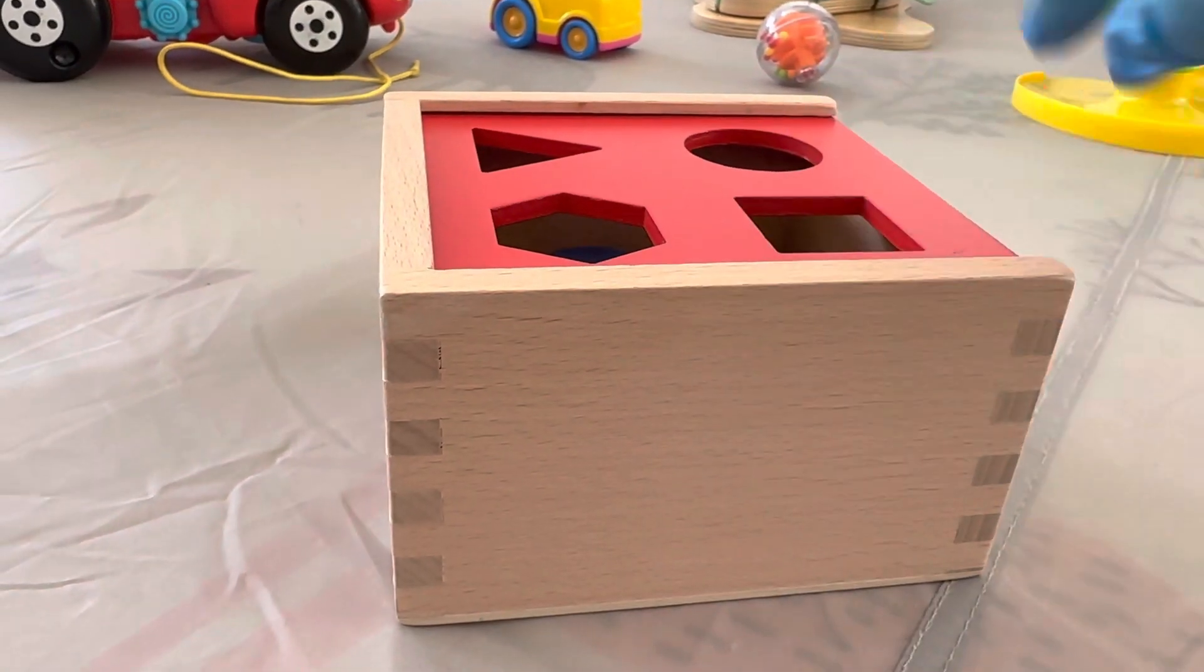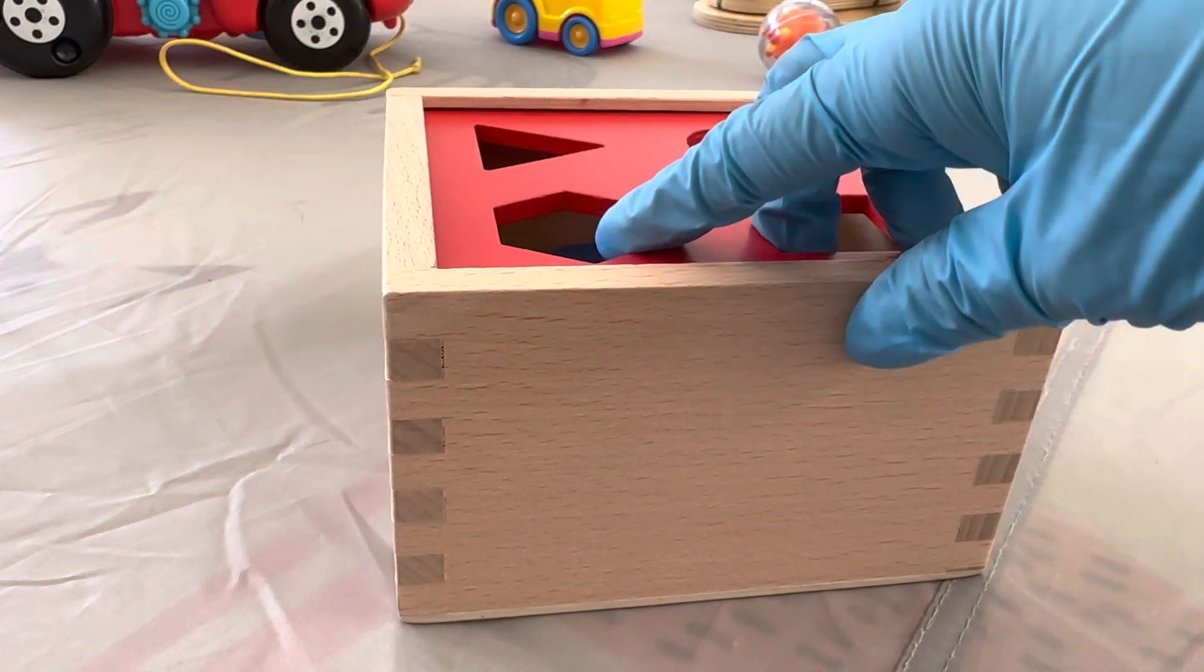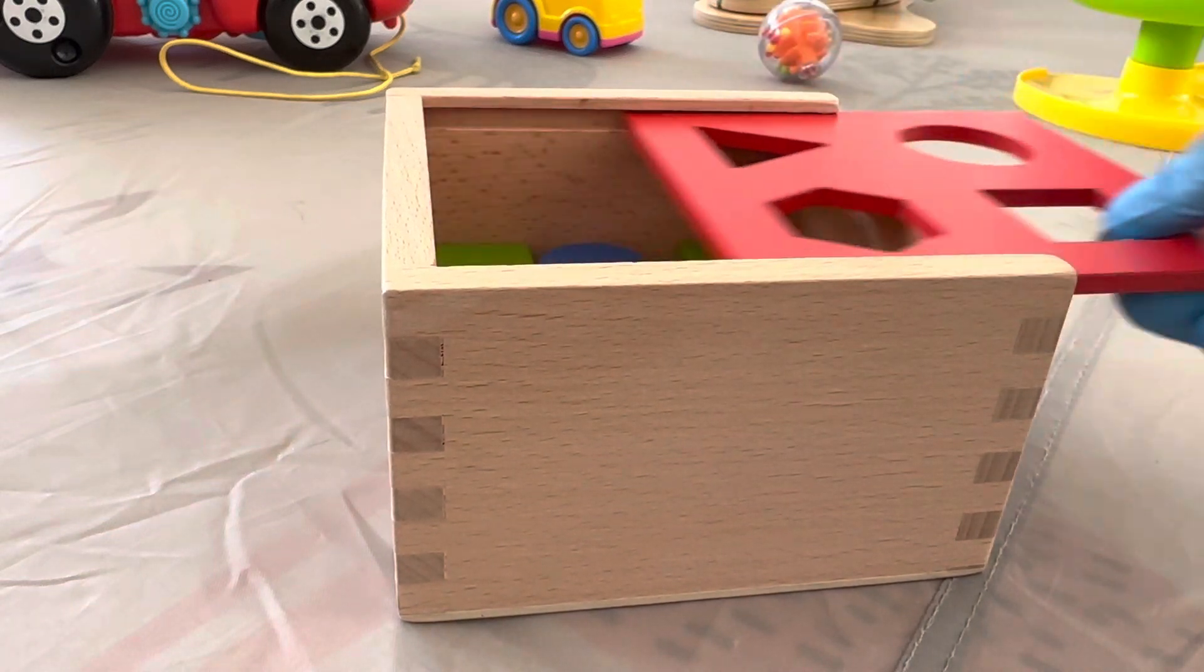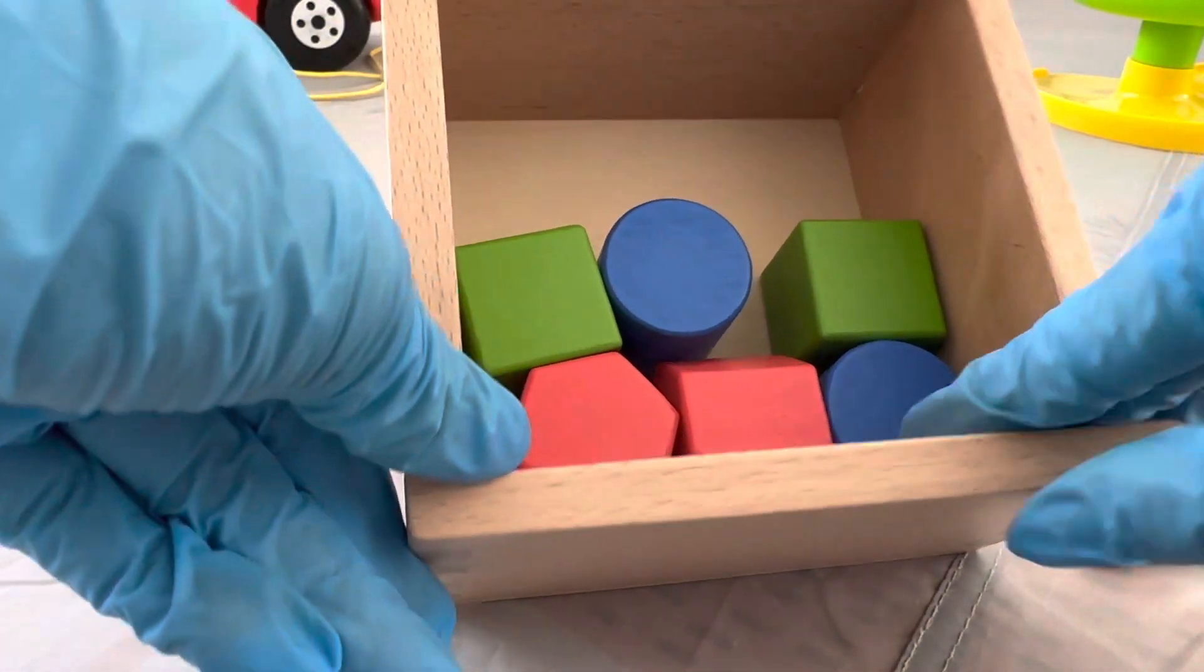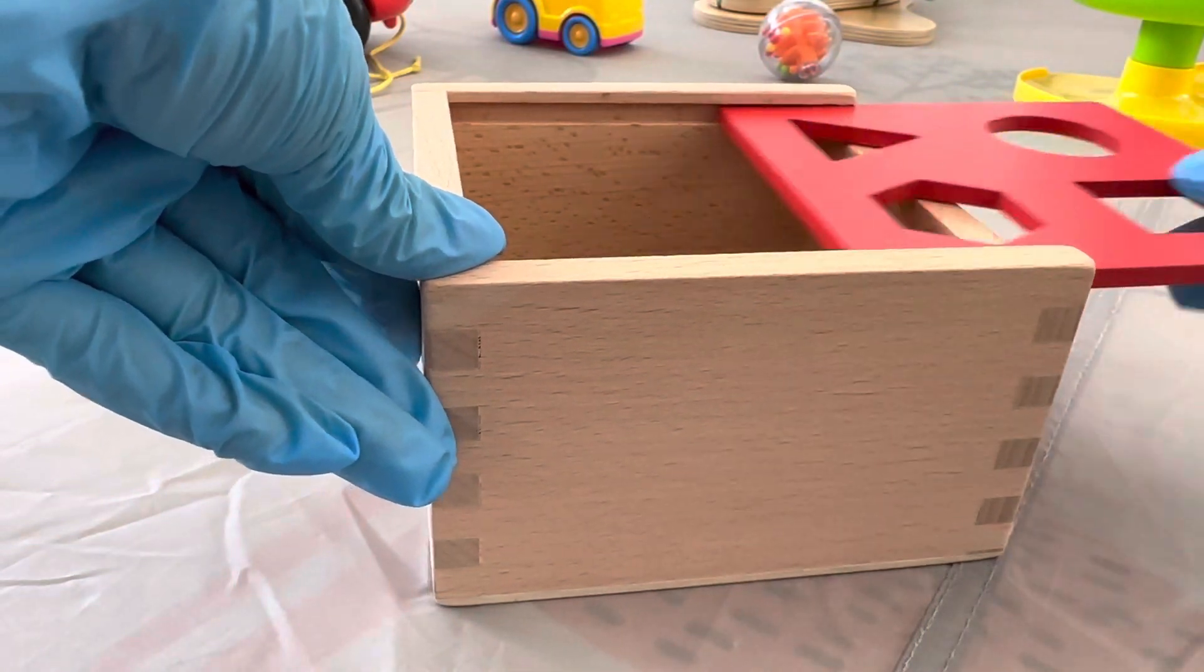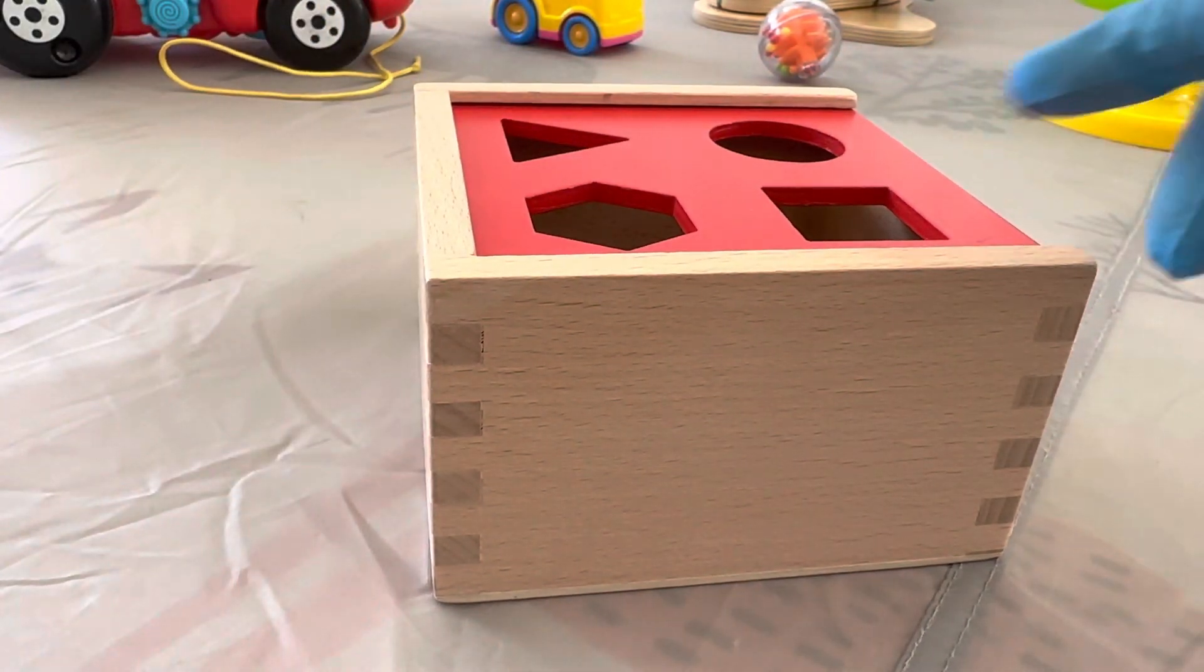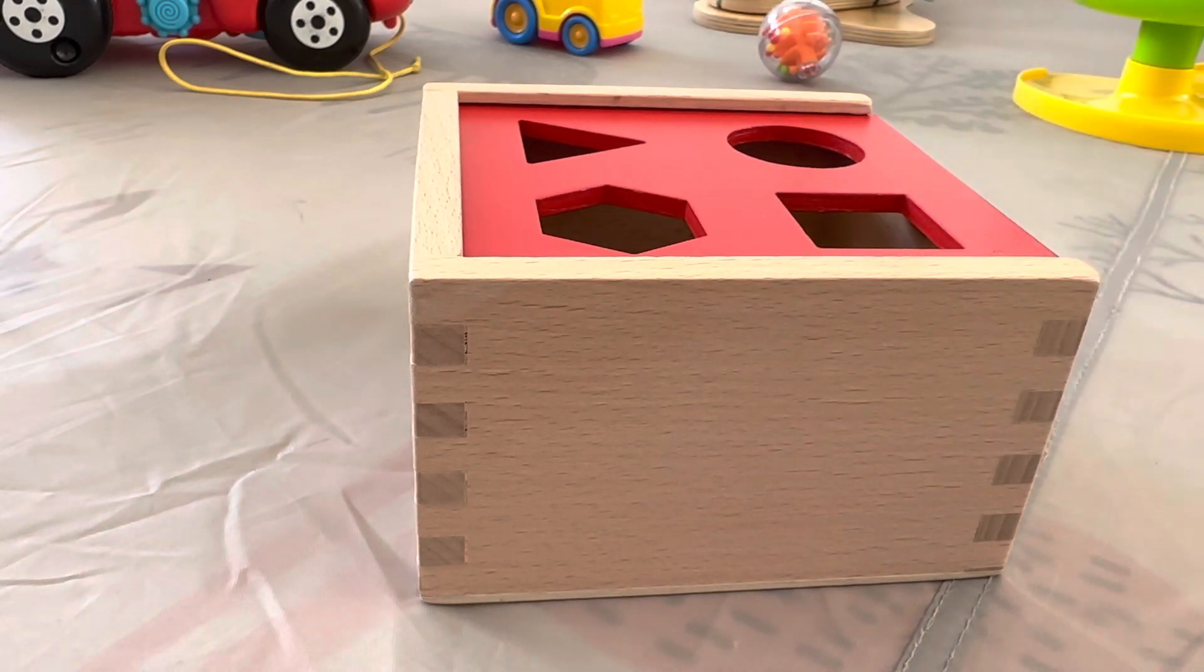When the baby is older, they can just put all the shapes through the sorter to the box. Right now, I just opened the lid and let my baby put everything in and take everything out. He really likes it. And because the color red is one of his favorite colors, he really loves looking at it and playing with it.